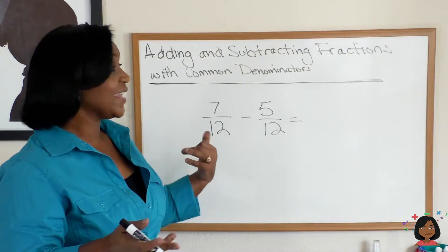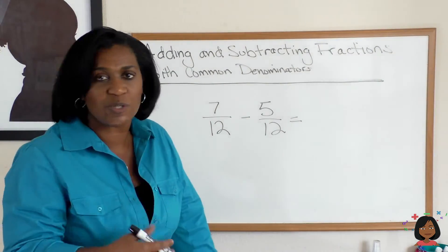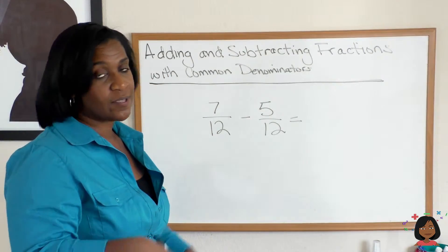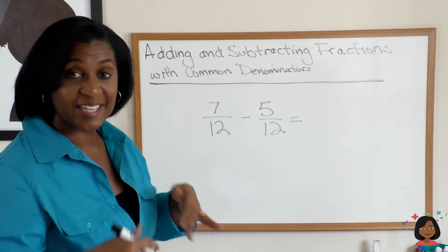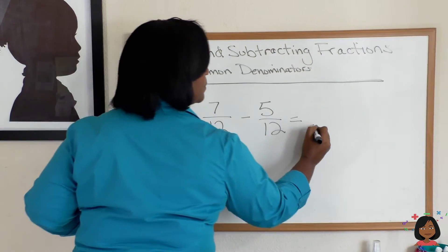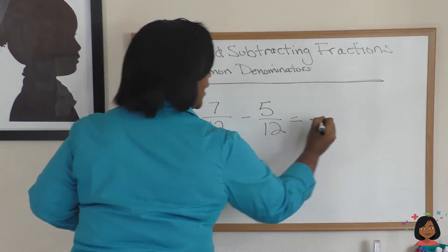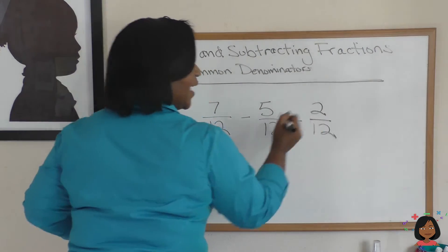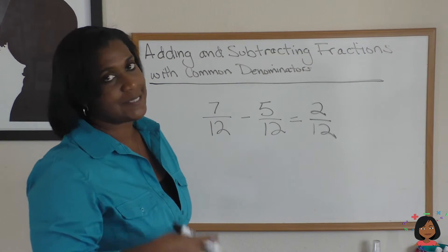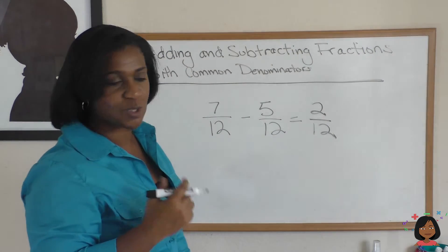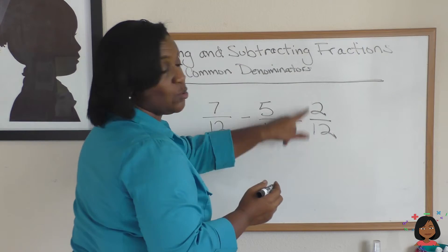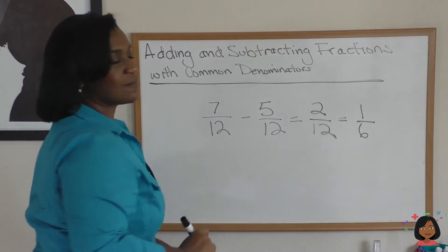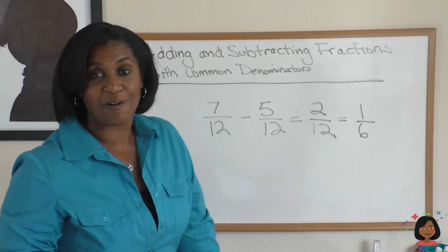This lesson is called adding and subtracting, so I've got to show you a subtraction example. Here we go: 7/12 minus 5/12. Same rules apply — keep your denominator the same and subtract your numerators: 7 minus 5 equals 2, giving us 2/12. We can simplify that: 2 goes into both numbers, which gives us 1/6. It's that simple.